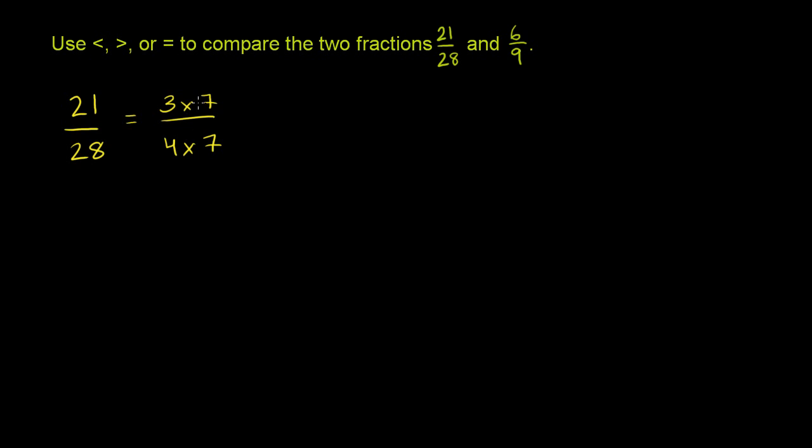Now, if you divide the numerator and the denominator by 7, 3 times 7 divided by 7 is just going to be 3. 4 times 7 divided by 7 is just going to be 4. So this guy right here is 3/4, is equivalent to 3/4.